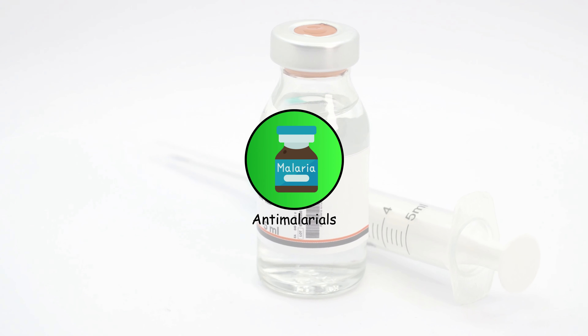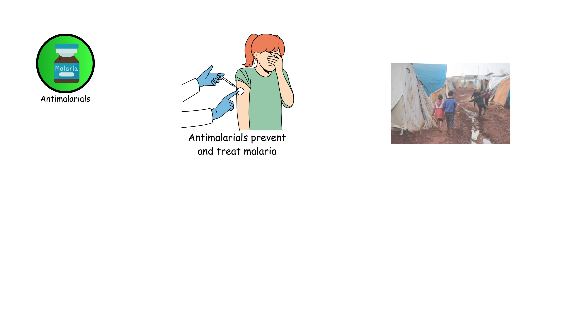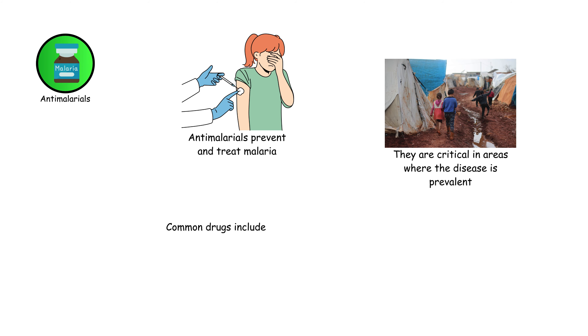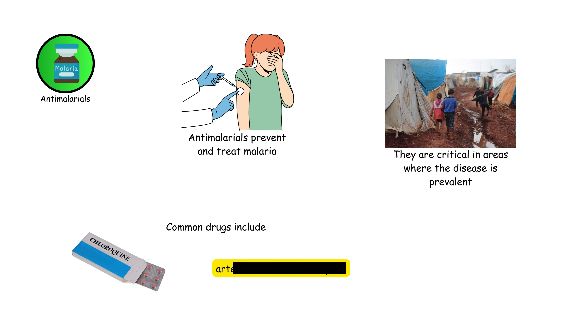Antimalarials prevent and treat malaria. They are critical in areas where the disease is prevalent. Common drugs include chloroquine and artemisinin-based therapies.